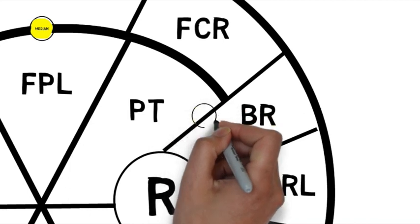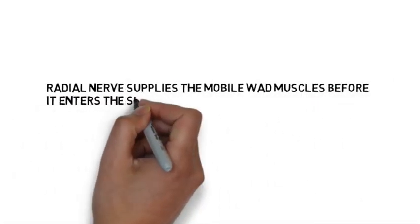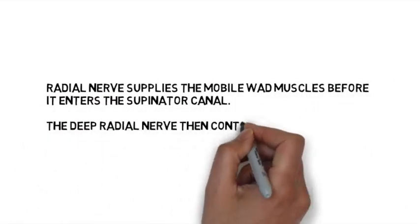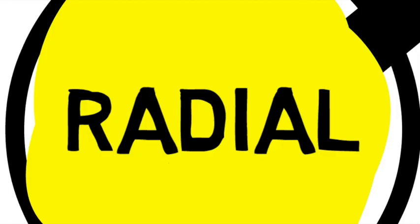The radial nerve is found underneath brachioradialis. This nerve supplies the mobile wad muscles before it enters the supinator canal. The deep radial nerve then continues as the posterior interosseous nerve, which supplies the muscles of the posterior forearm.